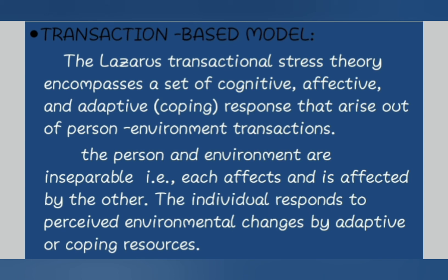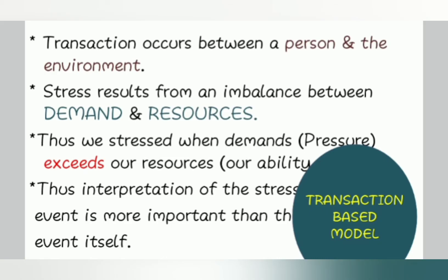Our last model is the transaction-based model. This model is based on the transaction between the environment and the person. We know that a person and their environment are inseparable — a person is affected by their surroundings. The individual responds to perceived environmental changes using adaptive or coping resources. If a person has enough coping resources, they will be able to adapt to the situation. If they lack those resources, they are more likely to experience a stressor. According to this theory, stress results from an imbalance between demands and resources — when demands exceed our ability to cope, we are more likely to experience stress.